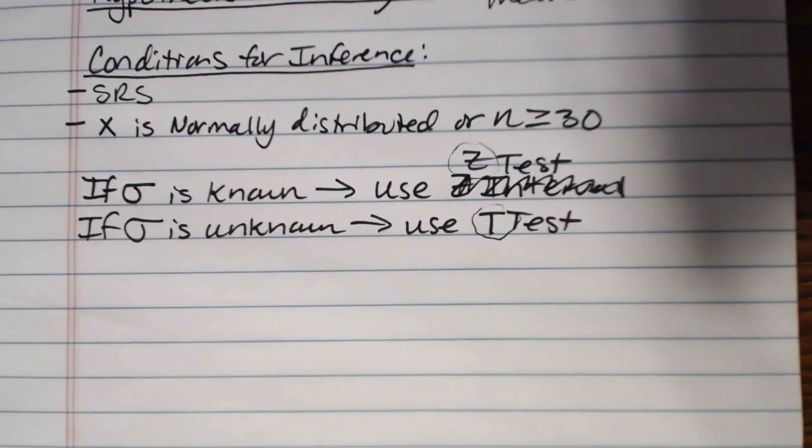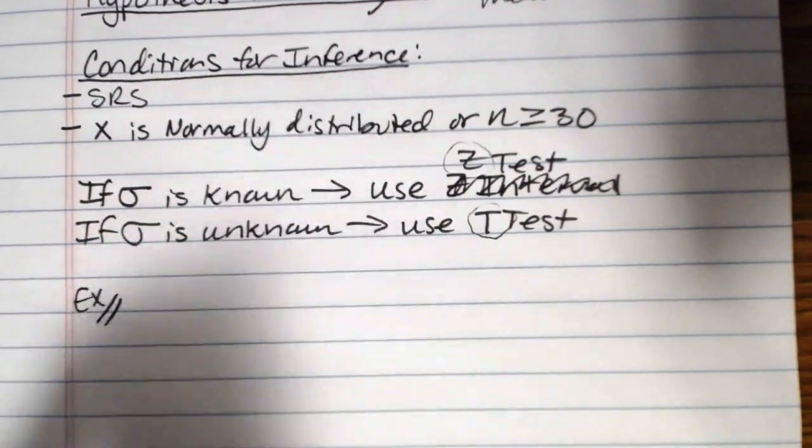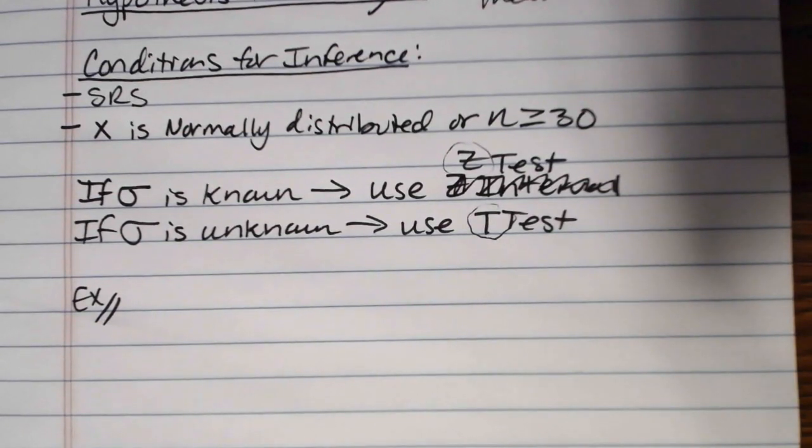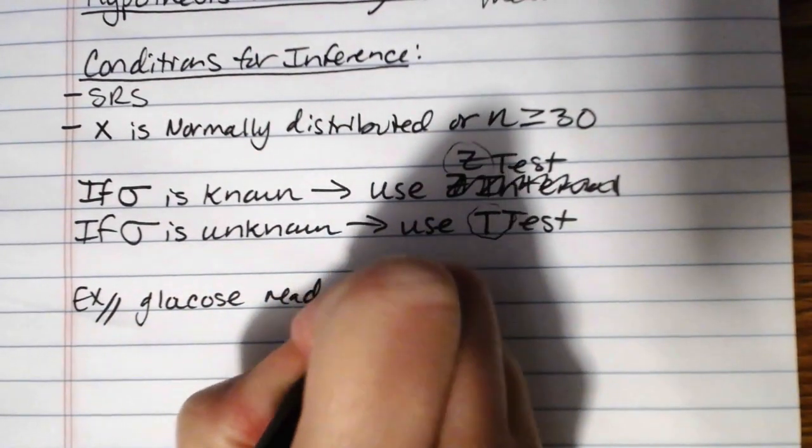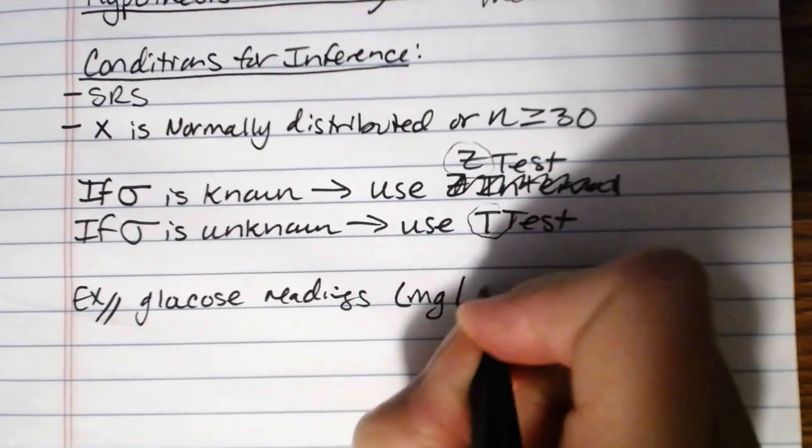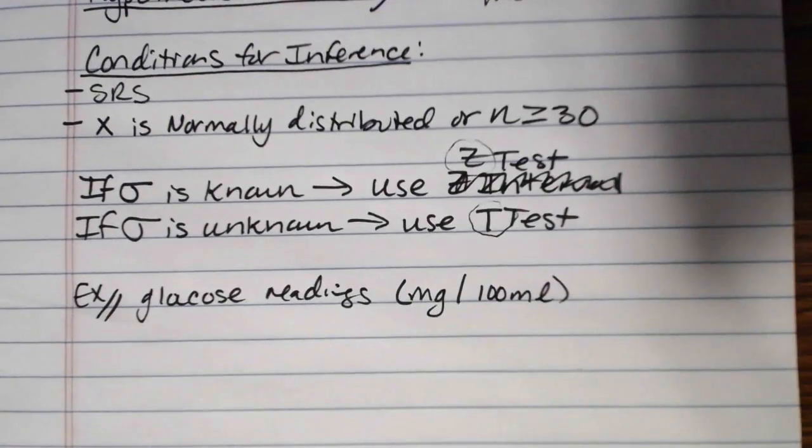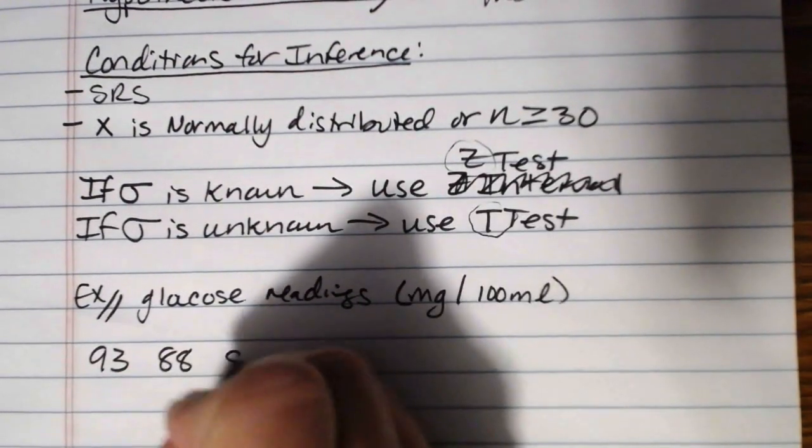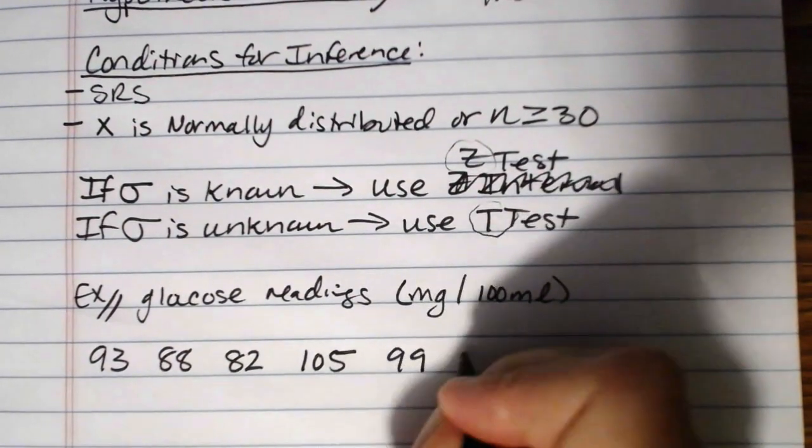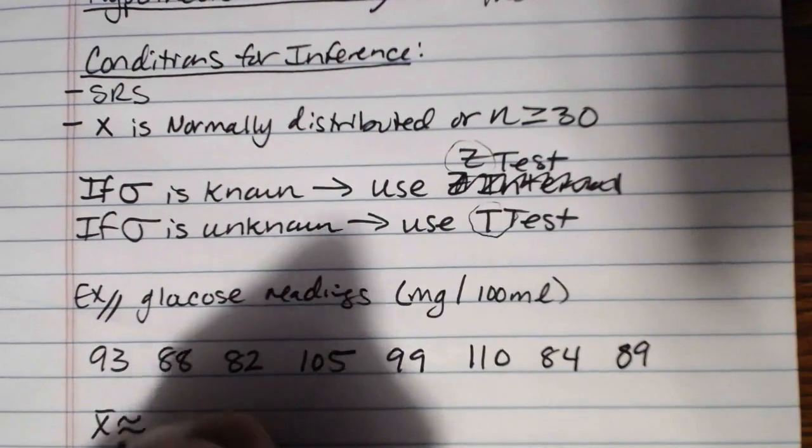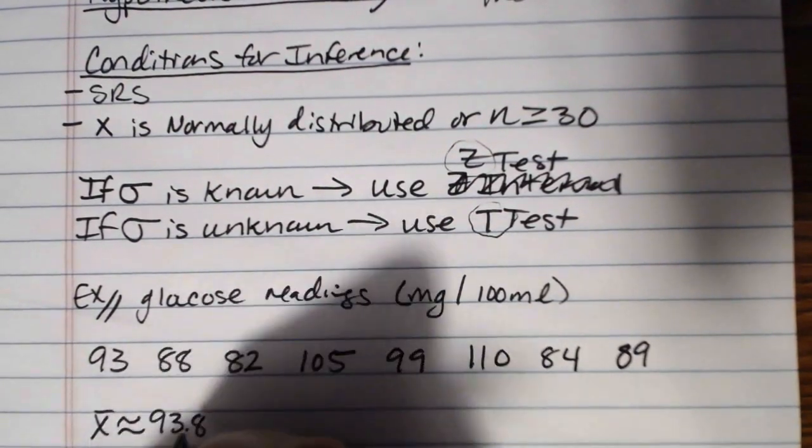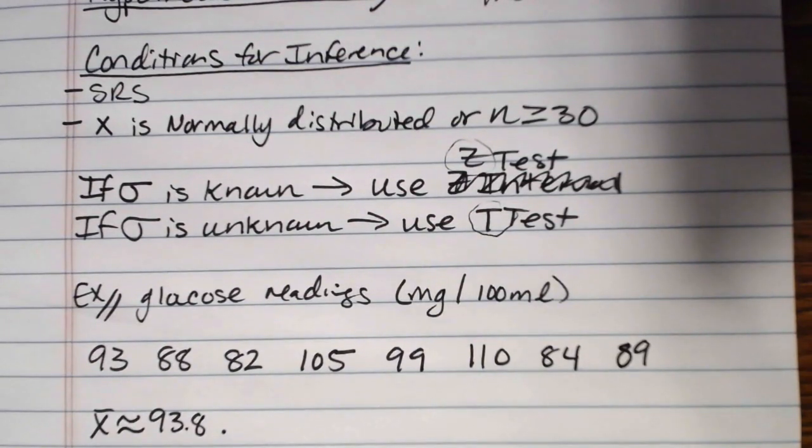Let's start by looking at an example. Here is an example with a glucose level for some horses. We have a horse at a Colorado dude ranch, a Morgan horse. Over the past eight weeks, a veterinarian took the following glucose readings from this horse. So these are glucose readings measured in milligrams per hundred milliliters. And what we have is 93, 88, 82, 105, 99, 110, 84, and 89. The sample mean x bar is approximately 93.8.